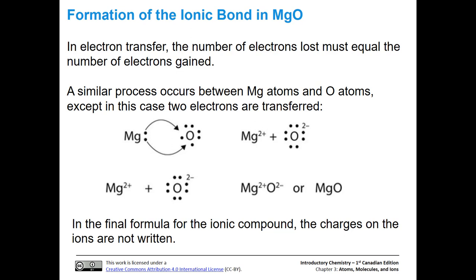In electron transfer, the number of electrons lost must equal the number of electrons gained. Consider magnesium, which is Mg²⁺, and oxygen, which is O²⁻. Both electrons on magnesium are transferred to oxygen. Oxygen starts off with 6 electrons and ends up with 8 after transfer. Magnesium starts with 2 in the valence shell and ends with 0, meaning the next inner shell becomes the valence shell. So we get magnesium 2+ and oxygen 2−.